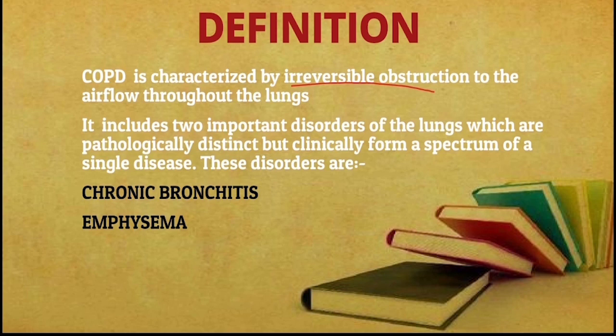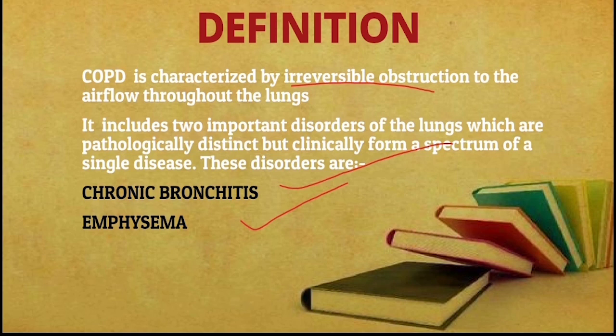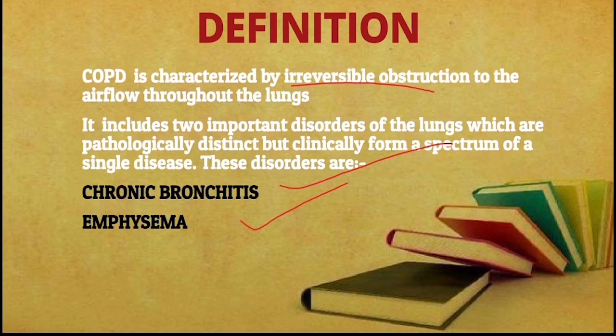COPD has two important disorders included in it. It is not like one of them will show alone and that is called COPD. It is always that either chronic bronchitis will be predominant along with emphysema, or emphysema will be predominant along with chronic bronchitis. COPD includes two disorders of the lungs which are pathologically distinct but clinically form a spectrum of a single disease — chronic bronchitis and emphysema.